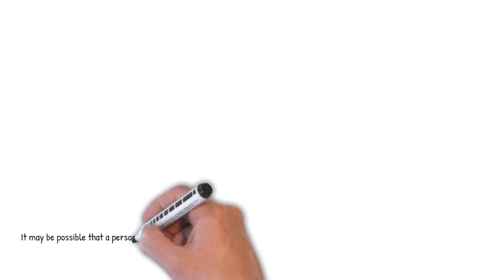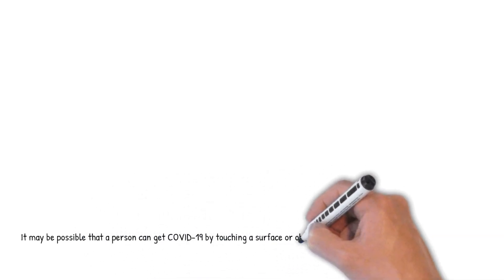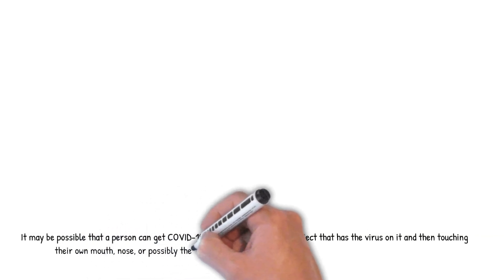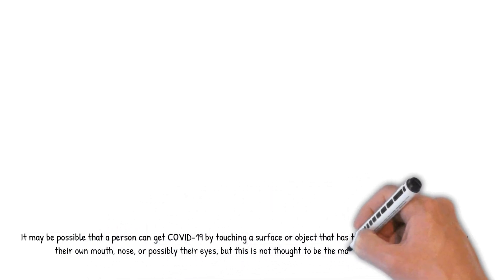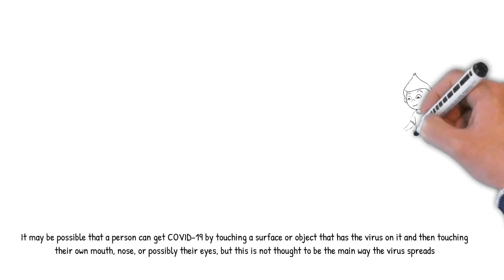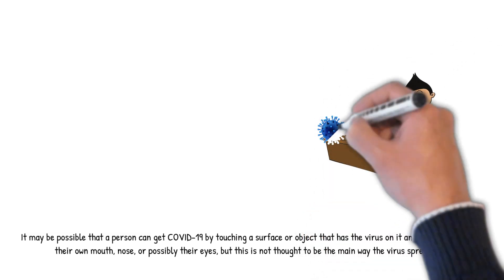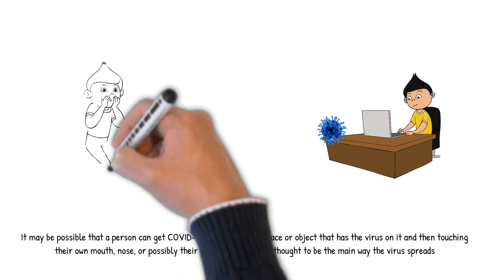It may be possible that a person can get COVID-19 by touching a surface or object that has the virus on it and then touching their own mouth, nose, or possibly their eyes. But this is not thought to be the main way the virus spreads.